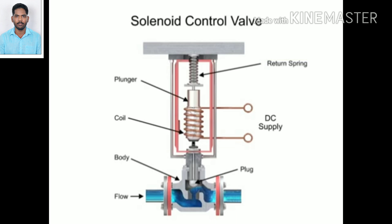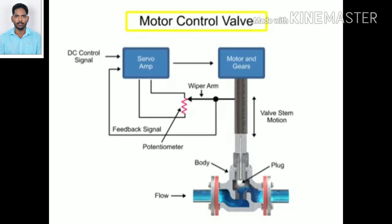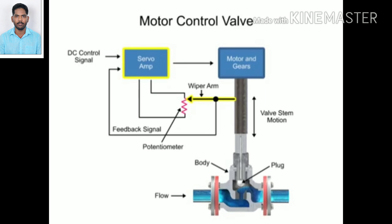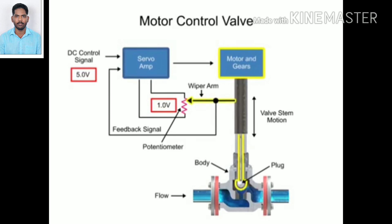Another method for variable valve positioning uses a motor and is referred to as proportional control mode. Using a gear motor attached to the valve stem, a servo amplifier provides a DC control signal that moves the valve to the desired position. Feedback is achieved with a wiper arm attached to the valve stem that sends a signal back to the servo amplifier where the position is monitored. The servo amplifier drives the motor until the control signal is equal to the feedback signal.